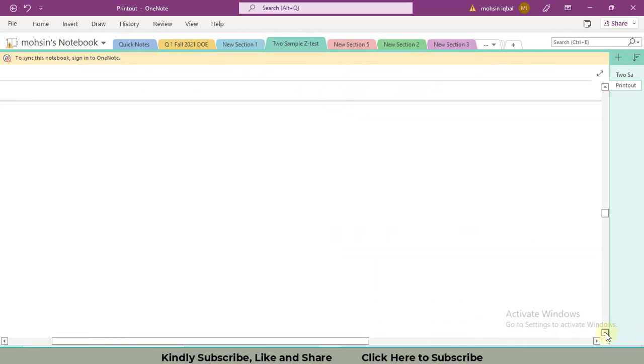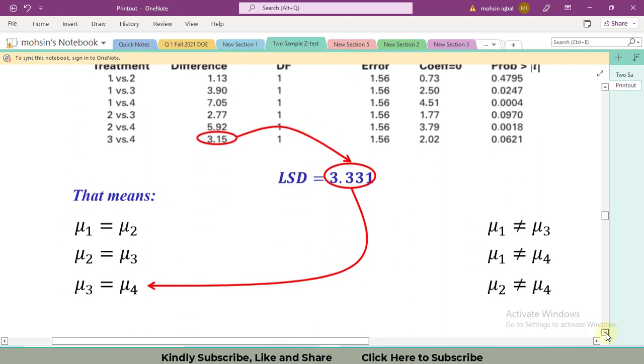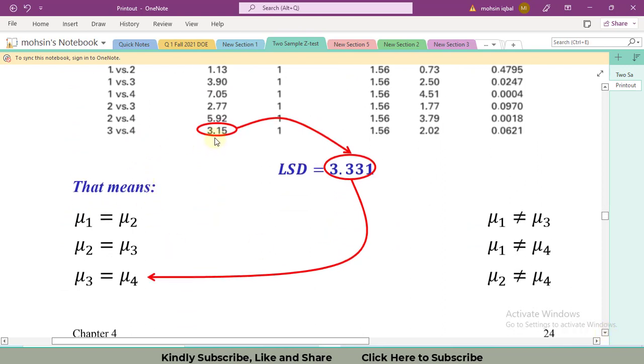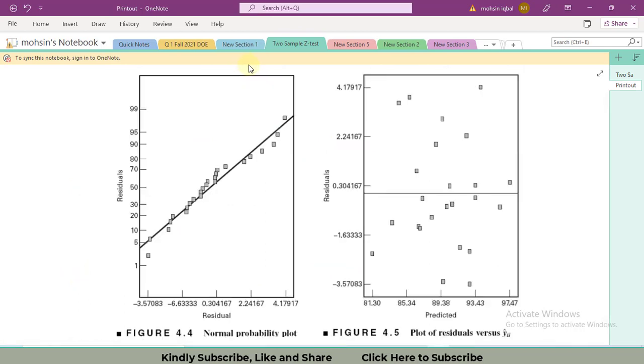For the last one, 3.15 is less than 3.33, again mu3 is equal to mu4.